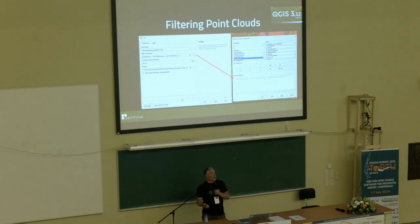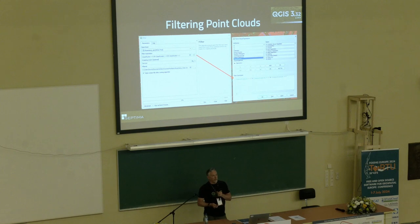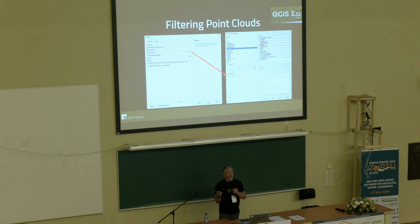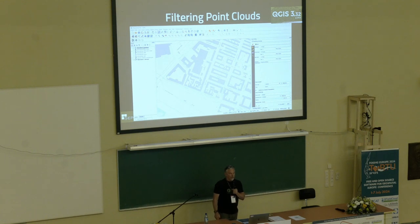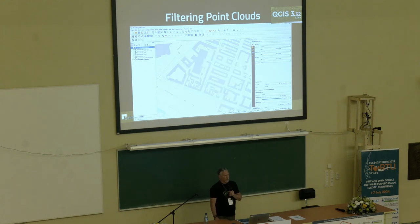There's also a filter point cloud algorithm, which is super nice. You can filter based on attributes — here's an example of filtering for vegetation low, medium, and high based on classification attributes. Here's another example where I'm extracting just the buildings: classification equals buildings results in just the buildings from that point cloud layer as a new point cloud.